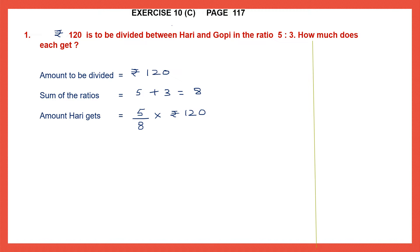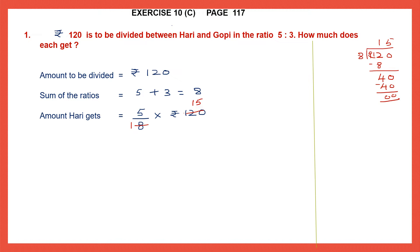5 by 8 into 120. We can cancel 8. Let's divide 120 by 8 — 8 into 15 gives us 120, so this is 15. Now let's multiply 15 into 5. 15 fives are 75. So Hari gets 75 rupees.